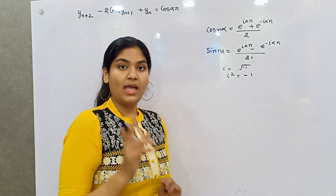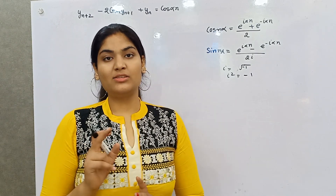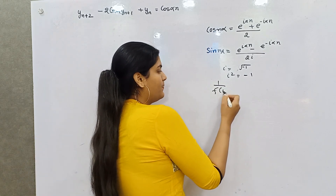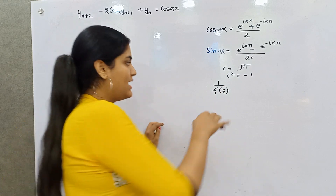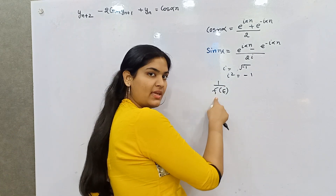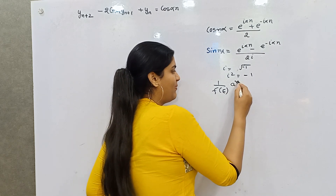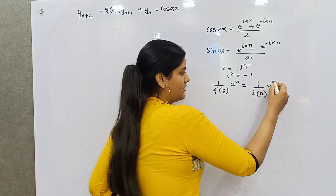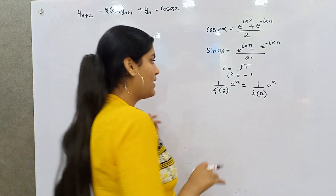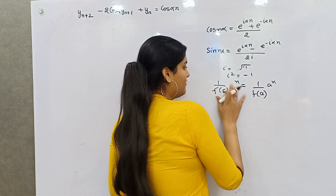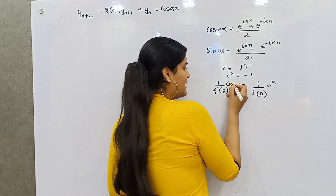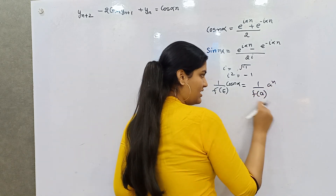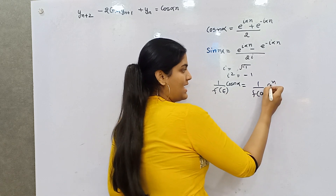If you remember from our last video on difference equations, if the characteristic equation has a power function, we simply put A in place of E for the particular integral. Similarly, if we have cos(nα), you take this formula but now your A is the complex exponential expression.